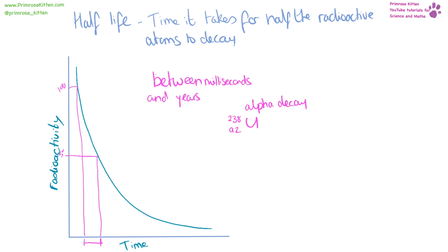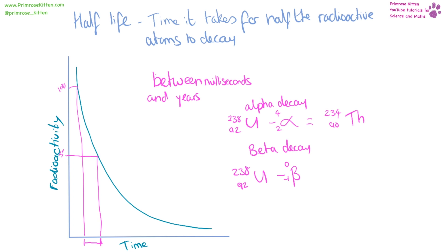The nuclear decay calculations are simpler than they look. For uranium-238 undergoing alpha decay, alpha is ⁴₂He: 238 minus 4 gives 234, and 92 minus 2 gives 90. Using the periodic table, atomic number 90 is thorium. For beta decay, beta is ⁰₋₁e: 238 minus 0 gives 238, and 92 minus (−1) gives 93, which is neptunium. The atomic number is the important thing in these calculations.